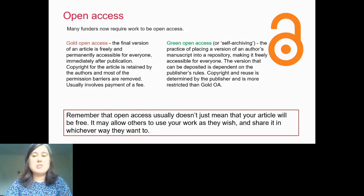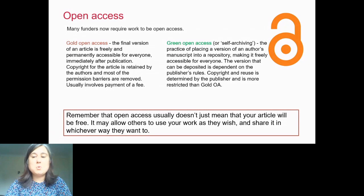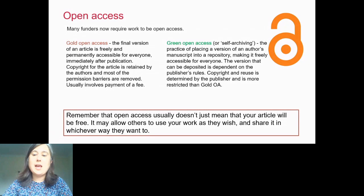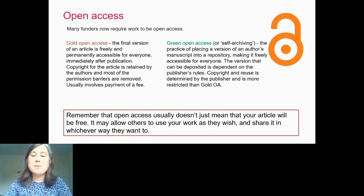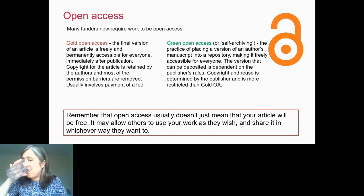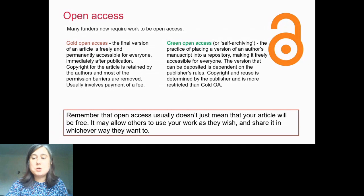Many funders of science, especially public funders, require work to be open access. Different models of open access exist: diamond or platinum, which is essentially free to authors and readers; gold, which usually involves paying a fee to the publisher rather than the reader paying to access; and green, which is a free option where the author effectively self-archives. Each model has its pros and cons.